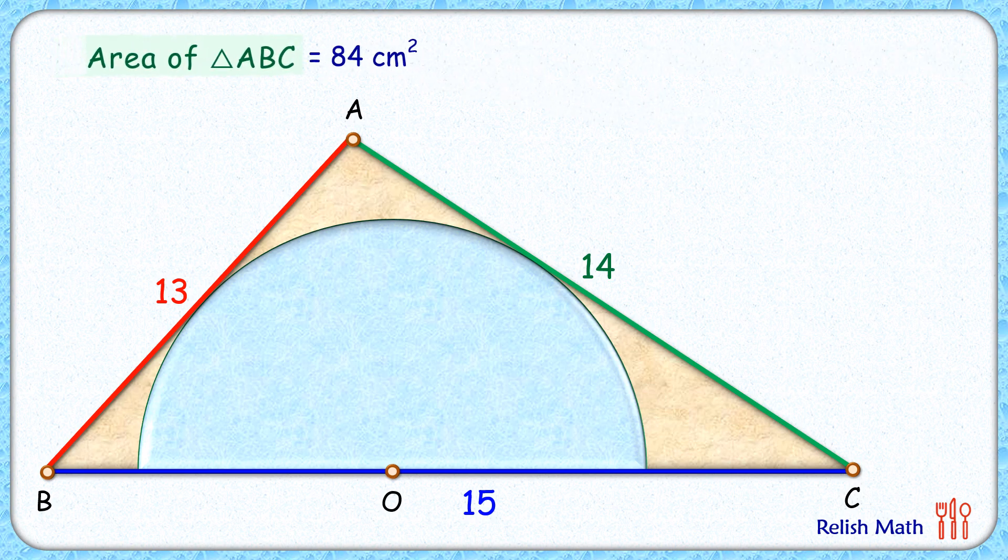Now let's assume the radius of this semicircle is r centimeters, and thus this length here will also be r centimeters.